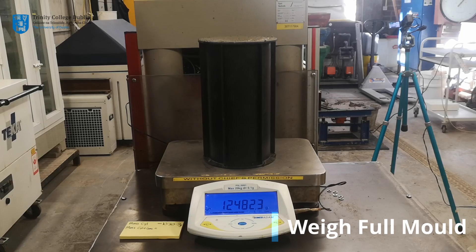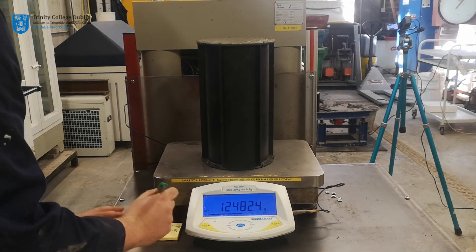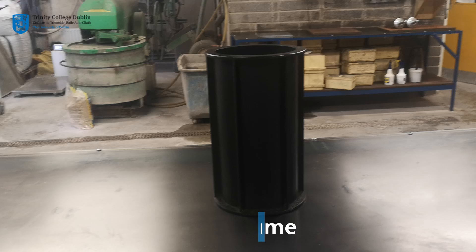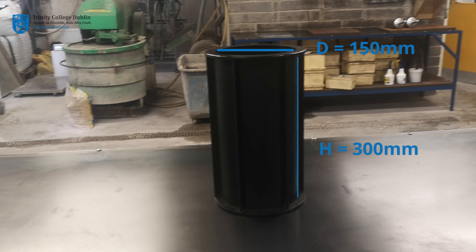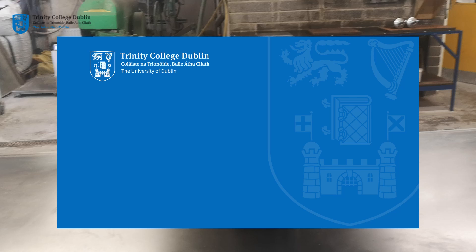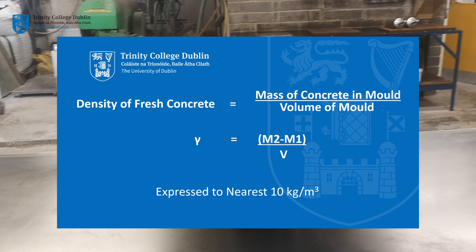The now full mold is weighed again on the balance. The mass of the concrete and mold combined is recorded to the nearest 0.01 kilograms as m2. The volume of the plastic cylinder mold is determined from the given dimensions and recorded as V. The density of the fresh uncompacted concrete, denoted by the Greek letter gamma, is then calculated as: gamma equals m2 minus m1 over V. This density should be expressed to the nearest 10 kilograms per meter cubed.